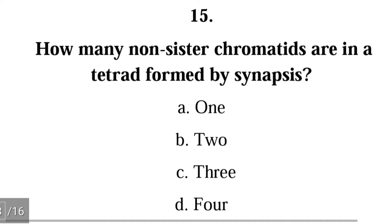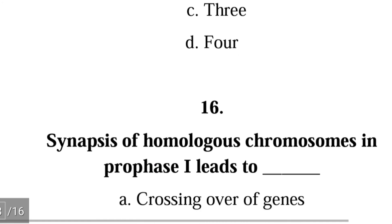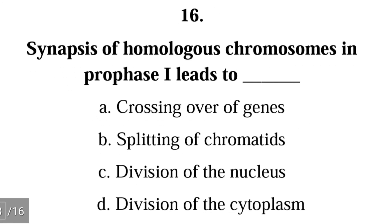Question 15: How many non-sister chromatids are in a tetrad formed by synapsis — one, two, three, or four? The correct answer is two. Question 16: Synapsis of homologous chromosomes in prophase 1 leads to — A. crossing over of genes, B. splitting of chromatids, C. division of the nucleus, D. division of the cytoplasm.